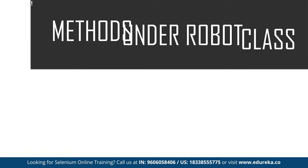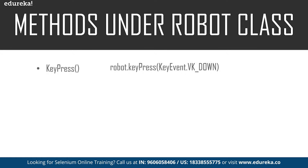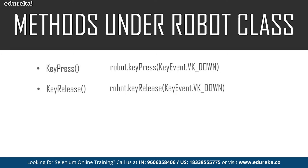The first method is key press, which is used to press any key on the keyboard. For example, a given command will press the up key on the keyboard. Next we have the key release method, which is used to release a pressed key on the keyboard. For example, a given command will release the pressed Caps Lock key. These are the methods used to control the keyboard functions.